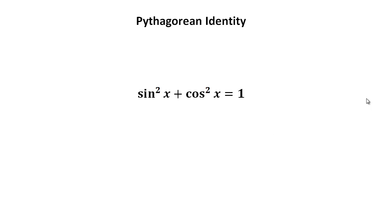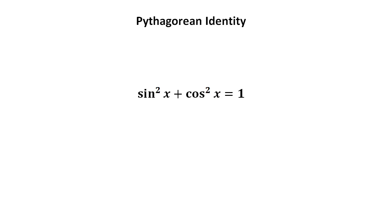You also know the Pythagorean identity: sine squared plus cosine squared of an angle equals 1. There are other versions of the Pythagorean identity we'll establish in this lesson. You'll also use the ratio identities — tangent of an angle equals the ratio of sine to cosine, and cotangent equals the ratio of cosine to sine.